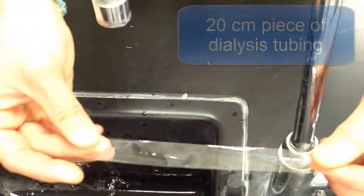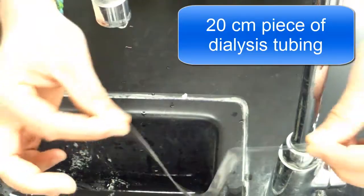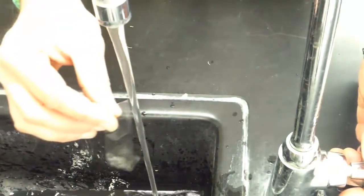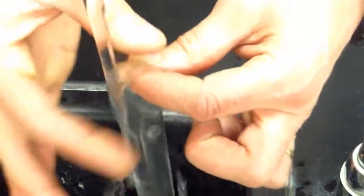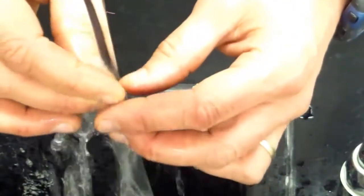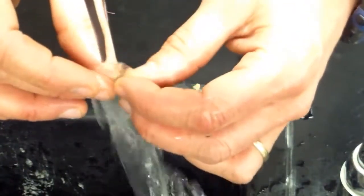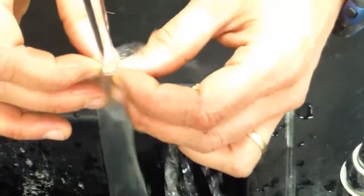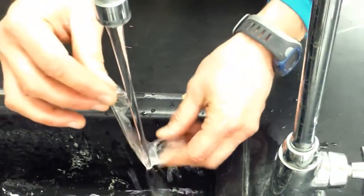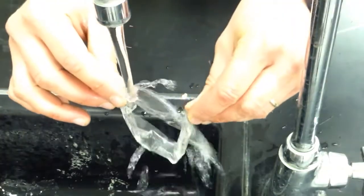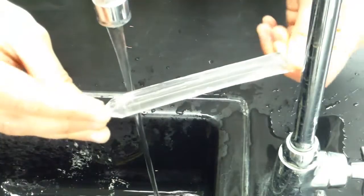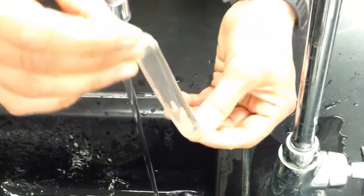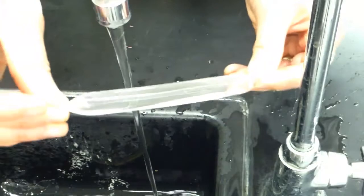Okay so the first thing you want to do is you want to get a 20 centimeter long piece of dialysis tube. Take it to a sink, turn on the water and let it run under the water and what you want to do is you want to rub it between your fingers and pretty quickly it will start to open up. You'll see it start to move and then if you carefully try to get one end open and hold on to the other end you'll see very quickly it turns into an actual tube so this actually has water inside and it has turned into a tube that's open on both ends.